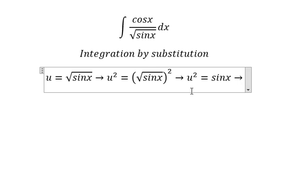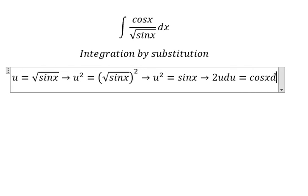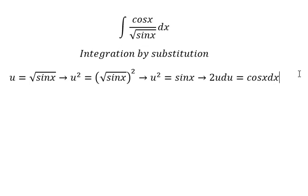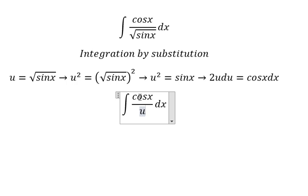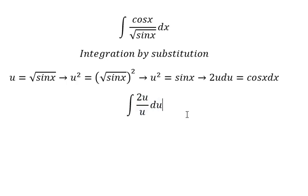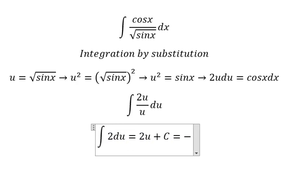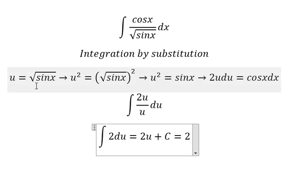Next, we differentiate both sides. We substitute this expression for u, and cosine x dx is replaced accordingly. We now have the answer for question number two in terms of u.